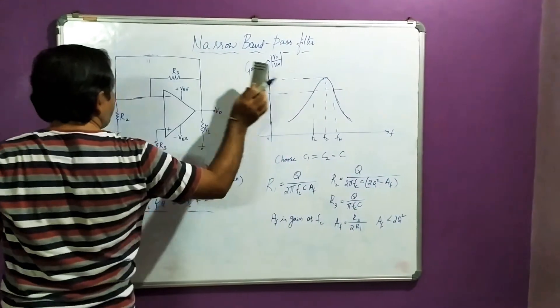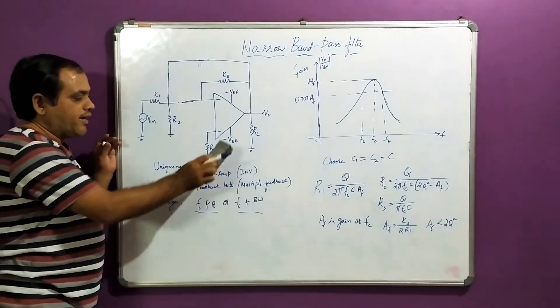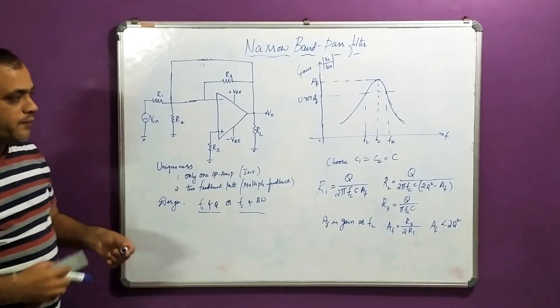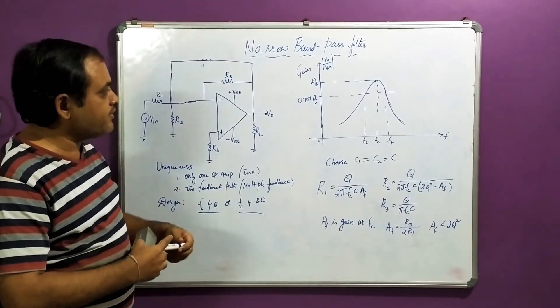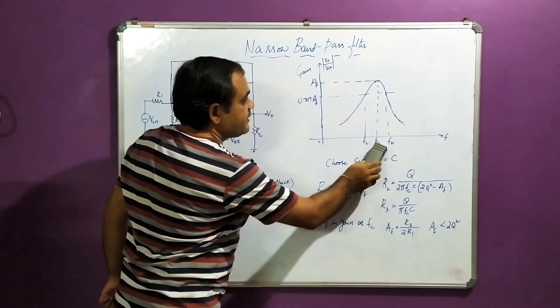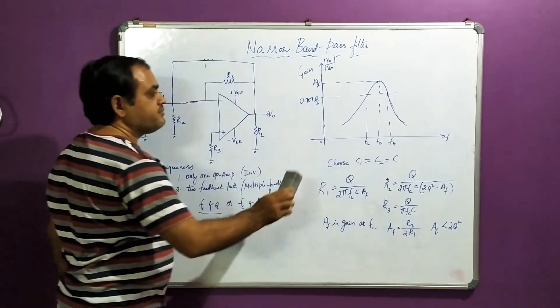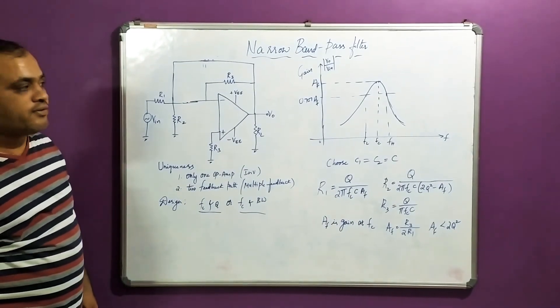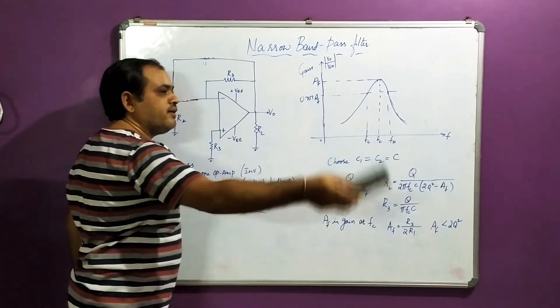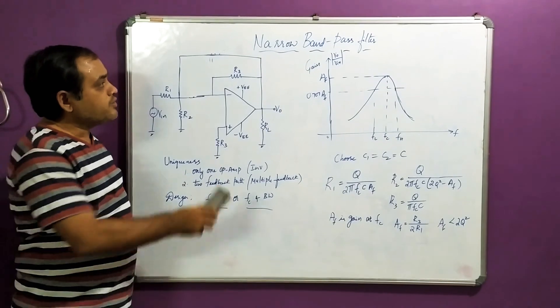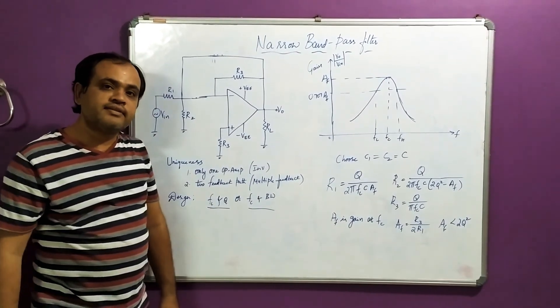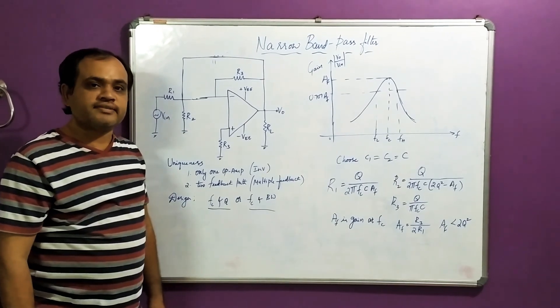Overall, this narrow band pass filter has a specialty of only one op-amp and two feedback paths. The advantage of narrow band pass filter is the center frequency can be changed into a new center frequency. Another frequency can also be designed from the original one to a new one. I hope you have understood narrow band pass filter. In the next session we will discuss band reject filters. Thank you.